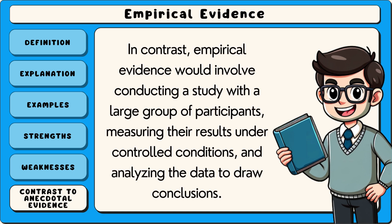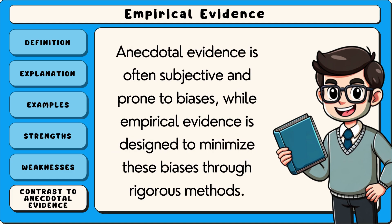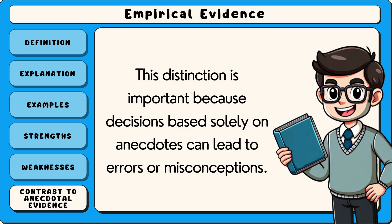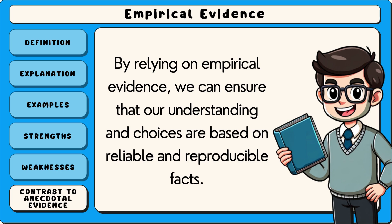In contrast, empirical evidence would involve conducting a study with a large group of participants, measuring their results under controlled conditions, and analysing the data to draw conclusions. Anecdotal evidence is often subjective and prone to biases, while empirical evidence is designed to minimise these biases through rigorous methods. This distinction is important because decisions based solely on anecdotes can lead to errors or misconceptions. By relying on empirical evidence, we can ensure that our understanding and choices are based on reliable and reproducible facts.